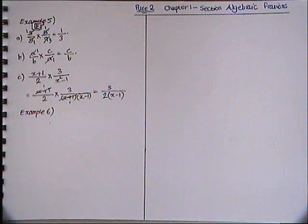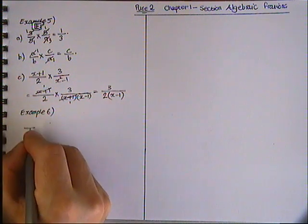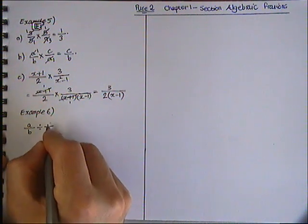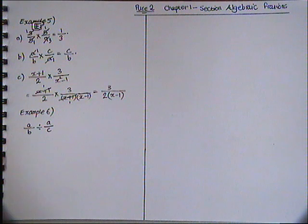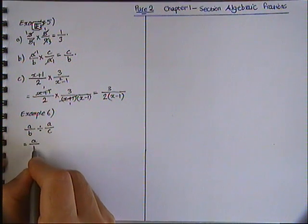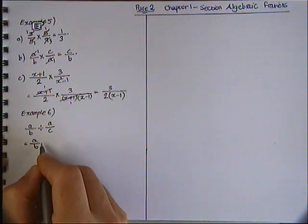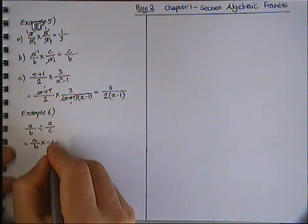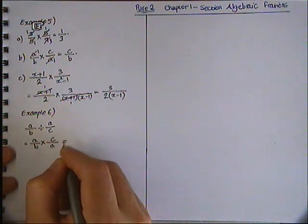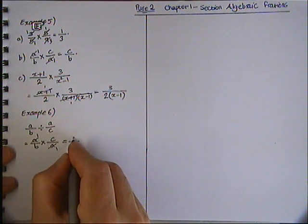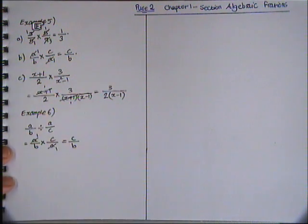So Example 6: a over b divided by a over c. To solve this, all we need to do - keep the first fraction as it is, change the division sign to multiplication, multiplies by, and swap the top and bottom of the second fraction, c over a. Now a and a cancels to 1 and 1. 1 times c is c, b times 1 is c over b.